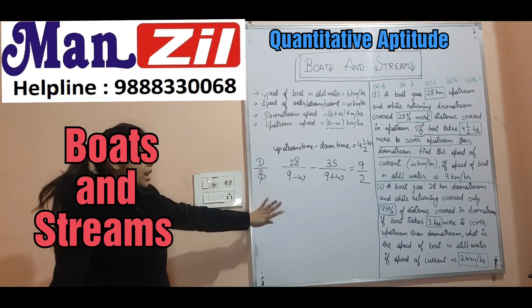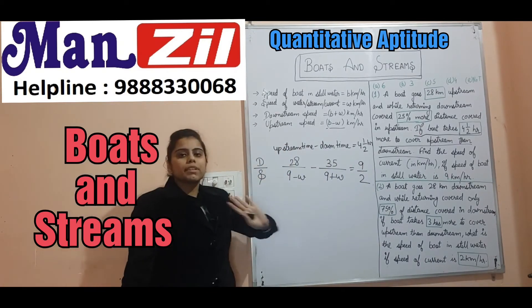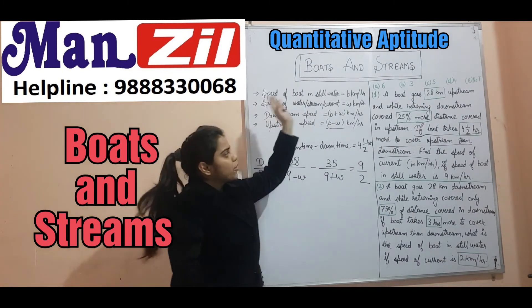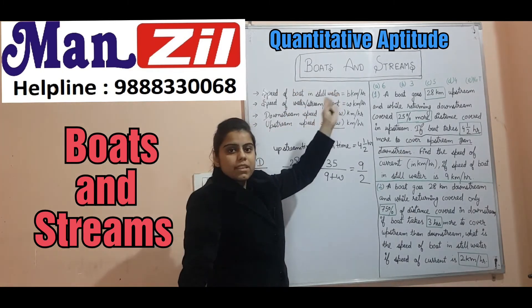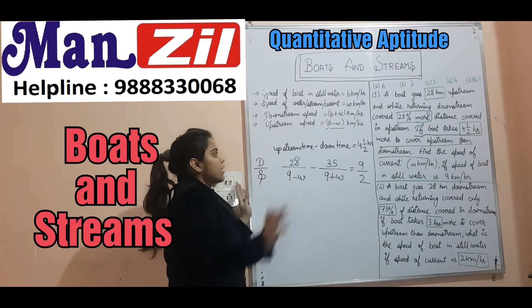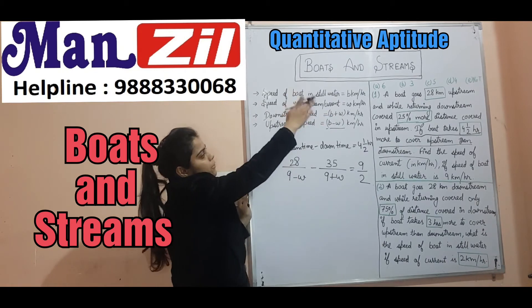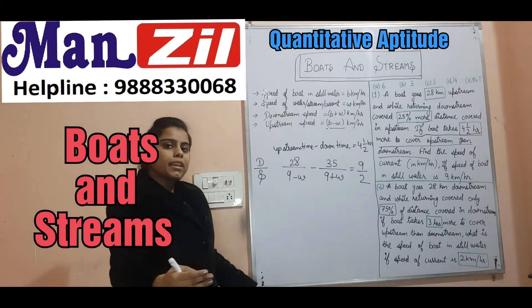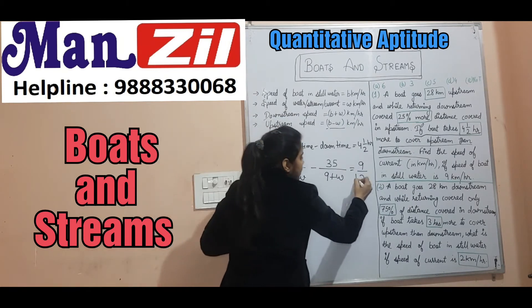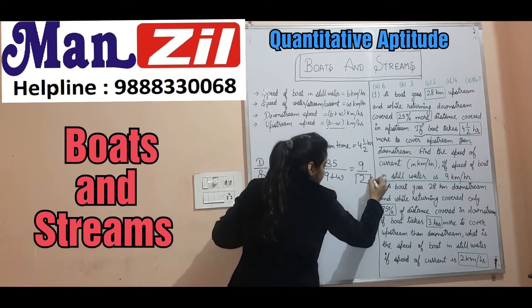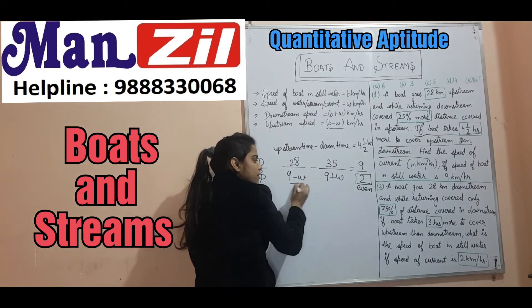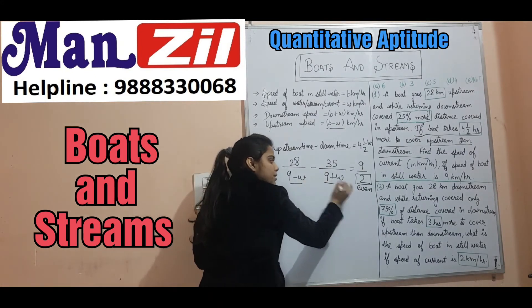Our equation is set up here — we don't need to solve it into a quadratic. Instead, we'll check the options. The options are 6, 3, 5, 4, and 9. We won't substitute every option. Our base on the right-hand side is even — 9/2 — so when we solve the left side, the base must also be even. Put the option that makes your base even.